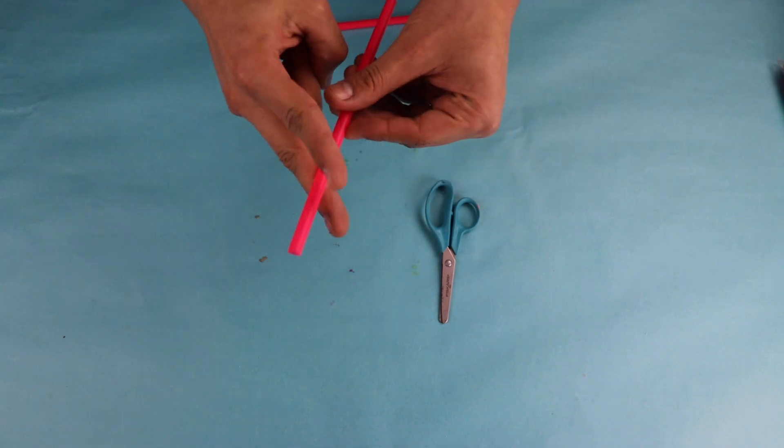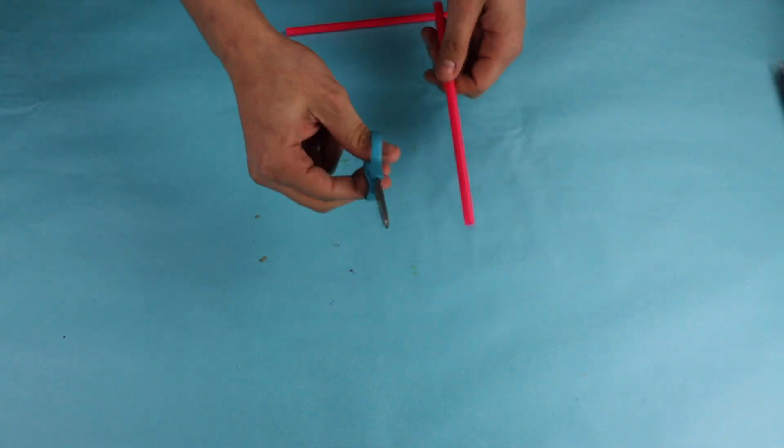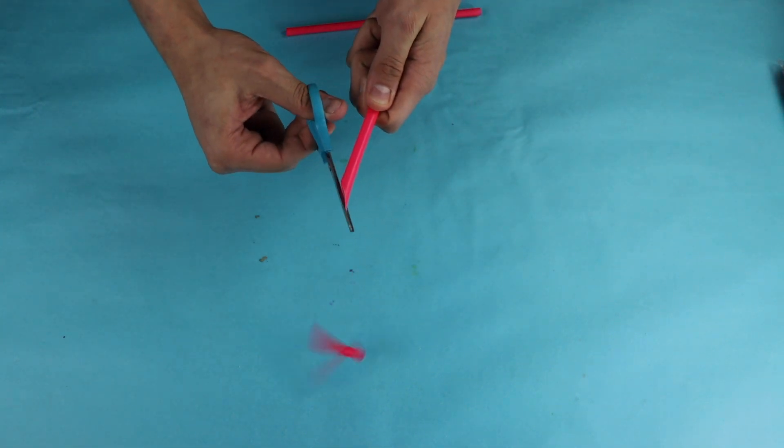Step one, cut your straw so that it forms an arrow or a point at the top.